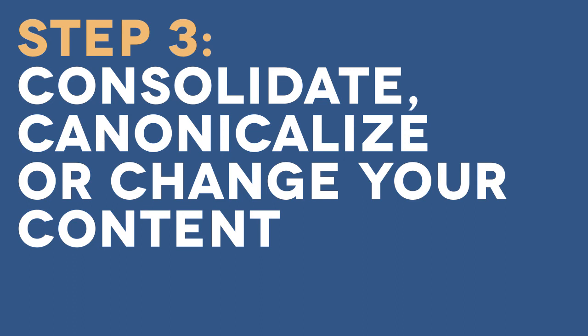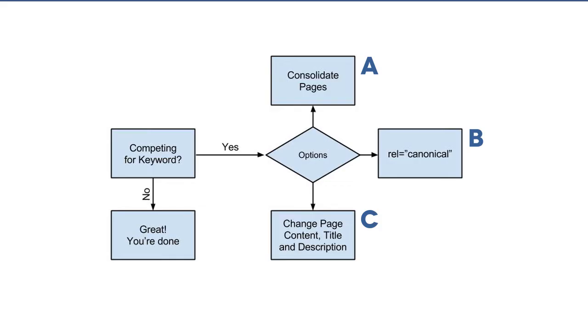Step 3: Finally, look at each set of competing pages. For each set, you have three choices of what to do next. Either A, consolidate pages that are competing for the same keyword, topic, and audience into one page; B, use the rel="canonical" tag to tell search engines which page you want them to treat as the authority on a given keyword or topic; or C, change the content, page title, and meta description to target a different unique keyword or audience.